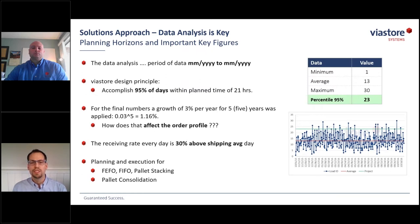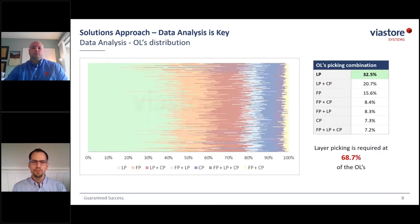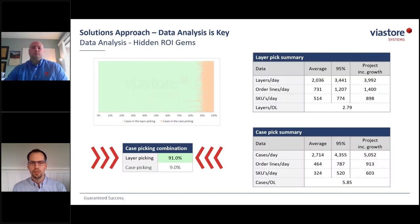Periodic reviews with our customers are important to validate findings and confirm that what we are observing is in alignment with their expectations. Oftentimes the detailed analysis unveils aspects of the customer's operation that they have not recognized or considered before. In this particular example, we recognized that there were three different picking methods a customer could use to process their orders: case pick, layer pick, and full pallet pick, with mixed orders of varying profiles.